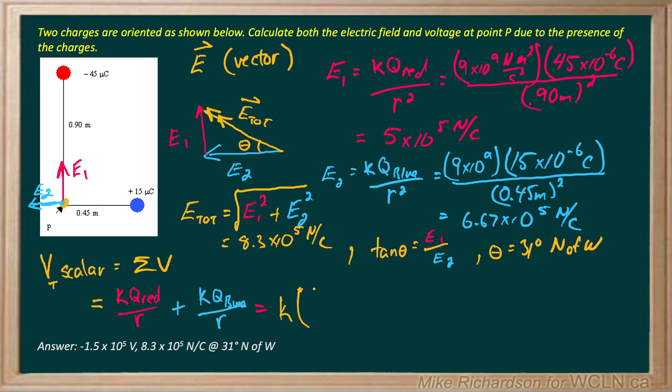So when all is said and done I end up with, now I'm going to factor out a K, and I'm going to get Q red over R red plus Q blue over R blue, which is K, 9 times 10 to the 9, times negative 45 times 10 to the negative 6 all over 0.9, plus positive 15 times 10 to the negative 6 all over 0.45.